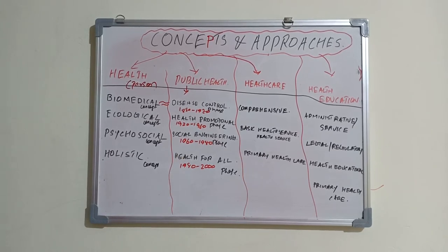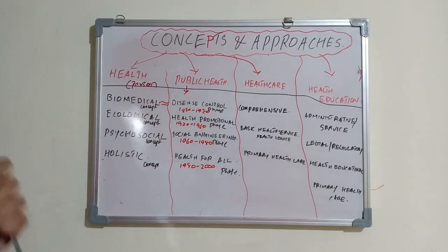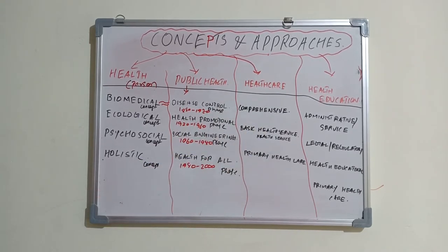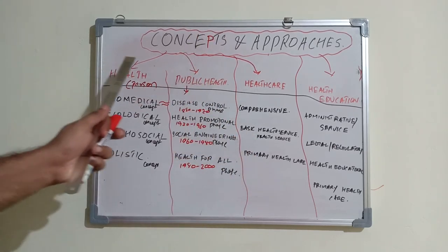WHO put forward the health for all concept to abolish that discrimination. Healthcare is about how the government provides health to people. Comprehensive health care is the womb-to-tomb concept put forward by the Bose Committee — everything should be provided from womb to tomb. Basic health services is a concept put forward by WHO and UNICEF, providing healthcare through peripheral units. Primary health care is the most accepted one, being the primary contact point through primary health centers and sub-centers.